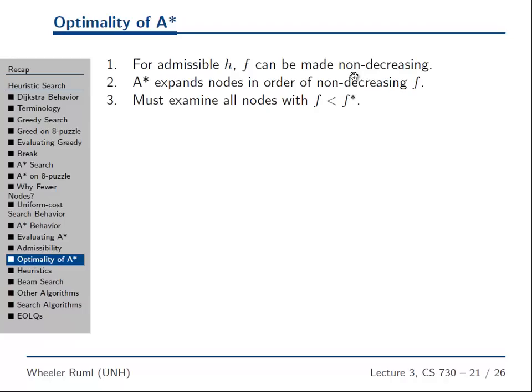A* expands nodes in order of non-decreasing f. In order to prove you found the optimal solution, you must look at all nodes with f less than the optimal solution cost. A* cranks through them from lowest to highest. It looks at all the nodes it has to and doesn't look at any node with f higher than the optimal solution. So A* very efficiently examines exactly the nodes it needs to — which is why it makes sense that it's optimally efficient.